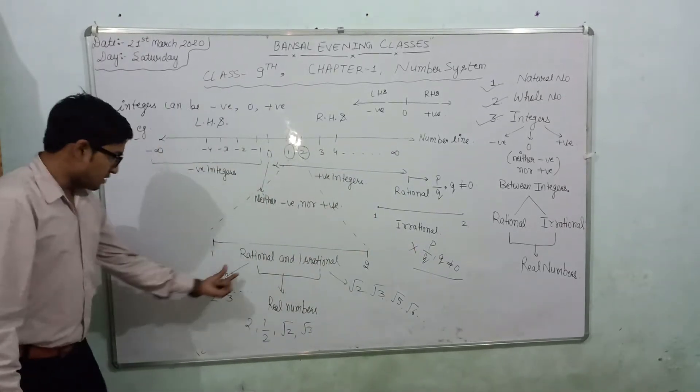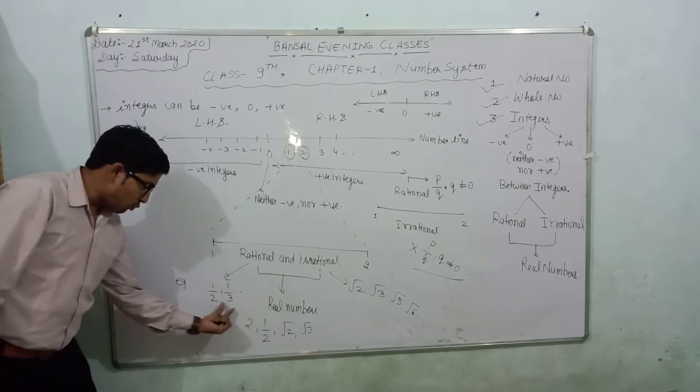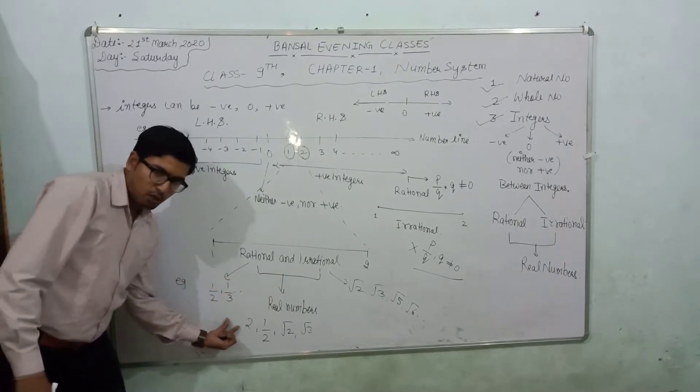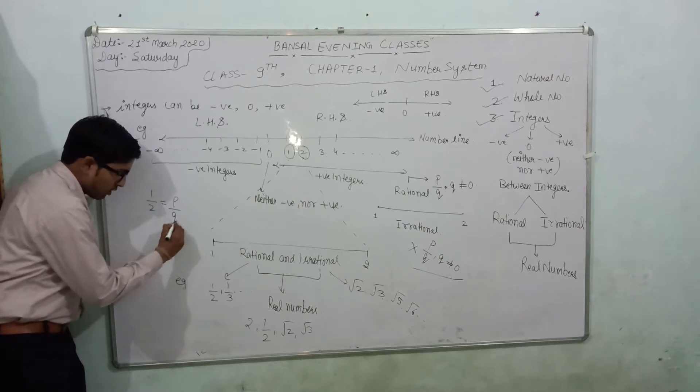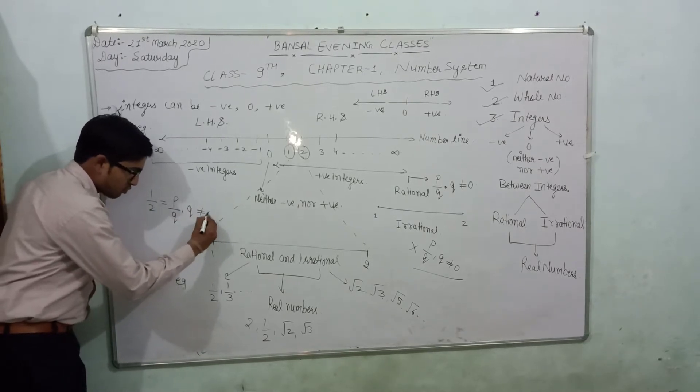If I give you an example, rational numbers: one by two, one by three. These all are rational numbers because one by two is written in the form of P by Q, and Q is not equal to zero.